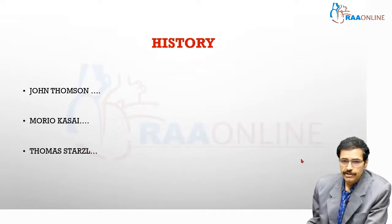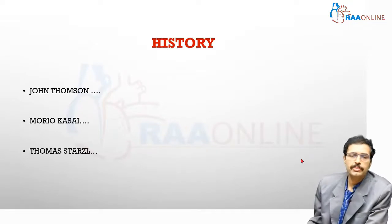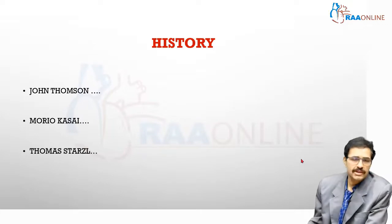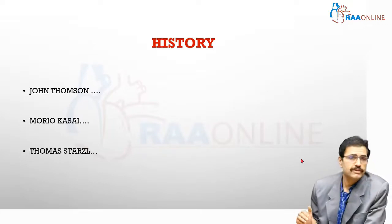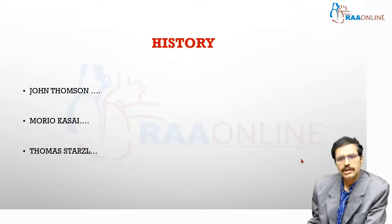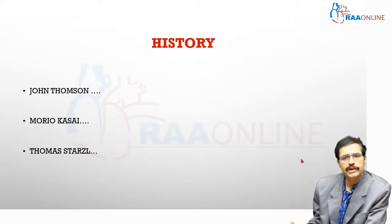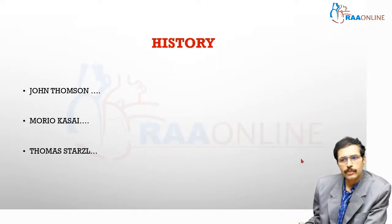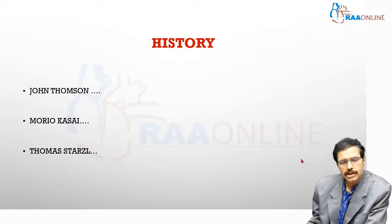Mario Kasai — a name synonymous with biliary atresia — was a very prominent surgeon who initially practiced in Japan and subsequently in the US. He studied biliary atresia in detail and suggested that it is a progressive disorder which seems to involve the extra-hepatic ducts first and then progresses to involve the intra-hepatic ducts. He examined the histology of the fibrosed remnants in the portal tract and found that the ductules were completely obliterated and the tubules were plugged.